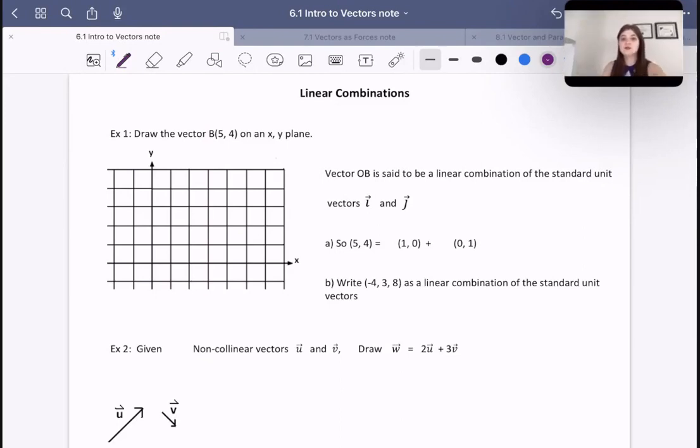So let's do a quick review before we explain what are linear combinations. Here it says, draw the vector b, 5, 4, on the x, y plane. So let's do that. Here we have our origin. And then 5, 4 would be 5 to the right and 4 up, like that.